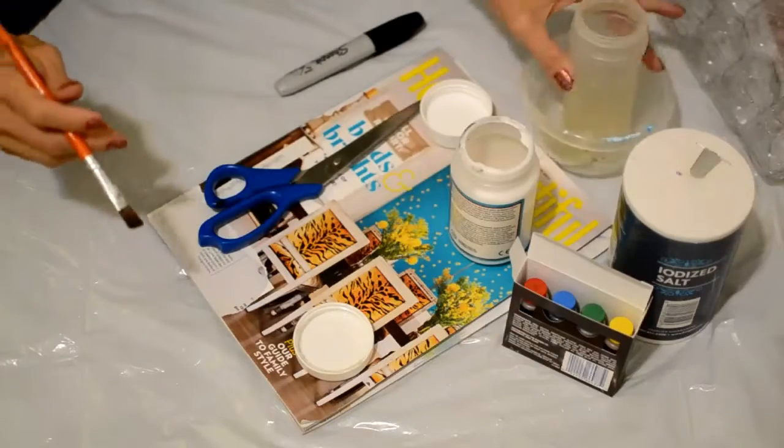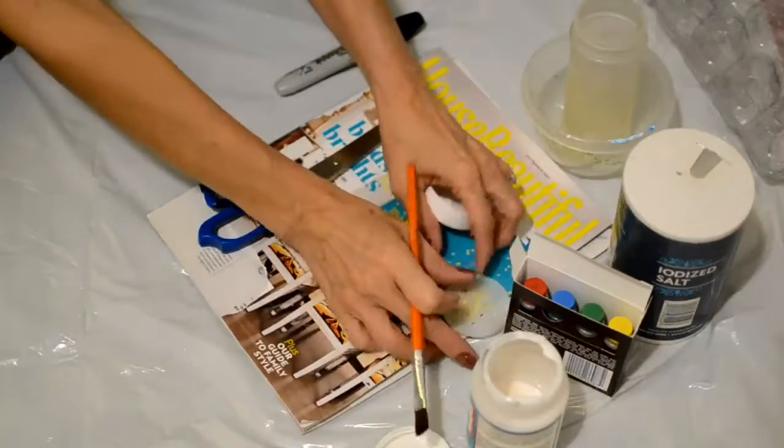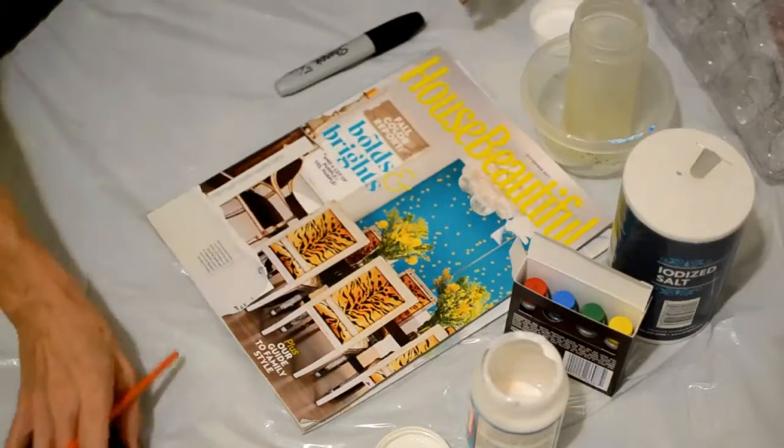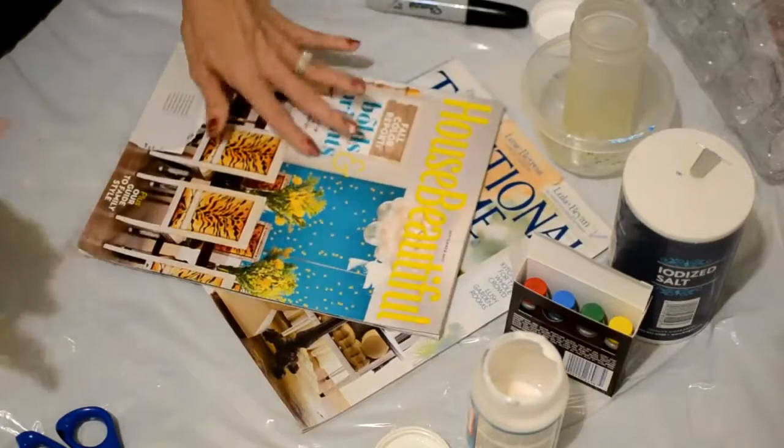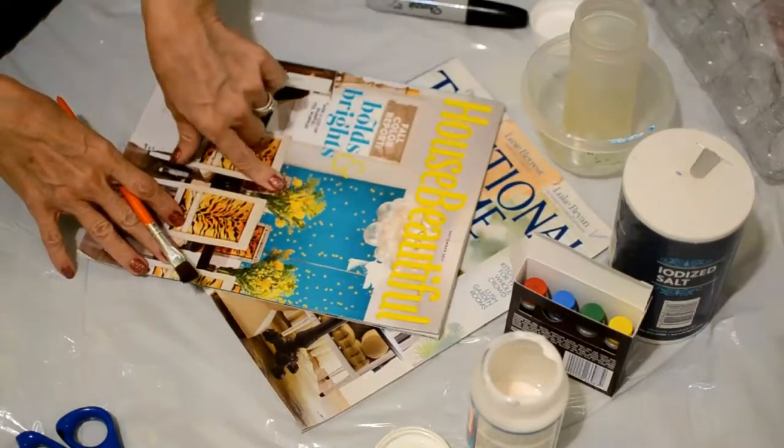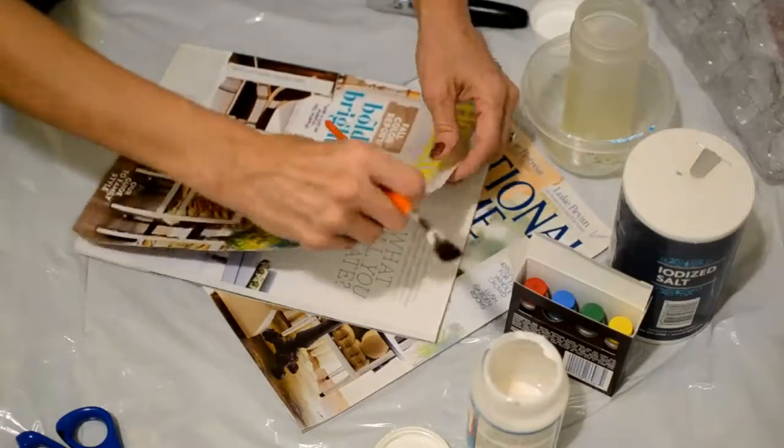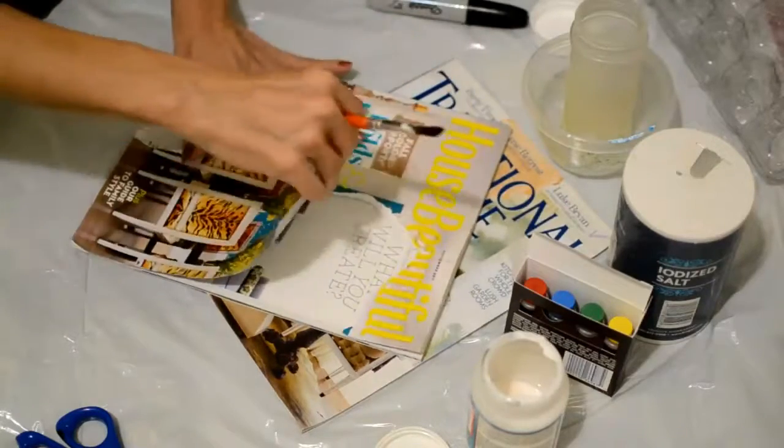And we are going to set this aside because what we're going to mod podge on here, well you can do anything you want. If you have a fabric you like or anything like that, that's perfectly fine. I'm using magazines. The turquoise and the yellow are some of the colors that I have in my home so I'm actually going to tear some right off of the front page.